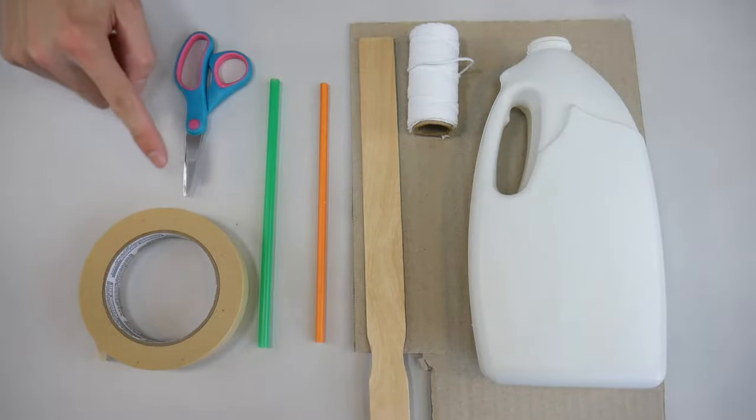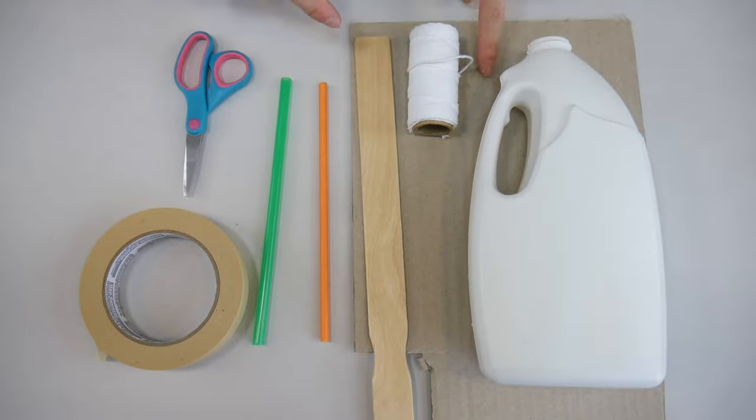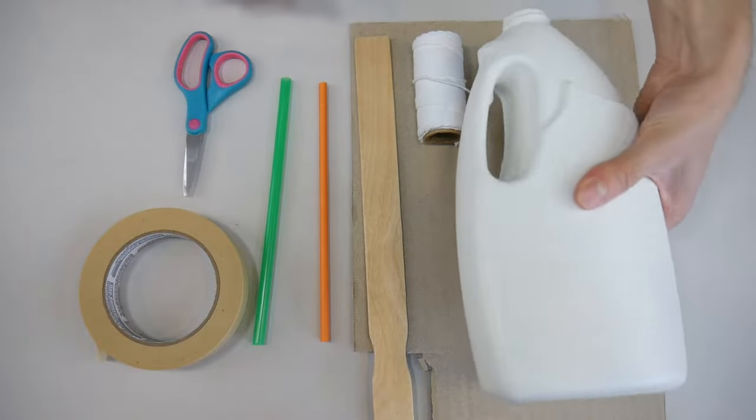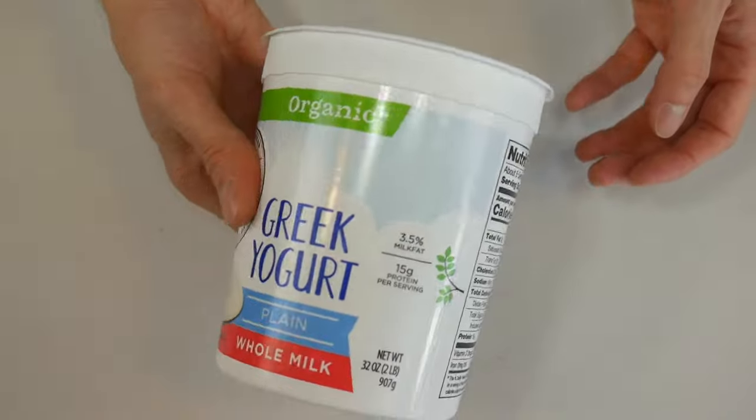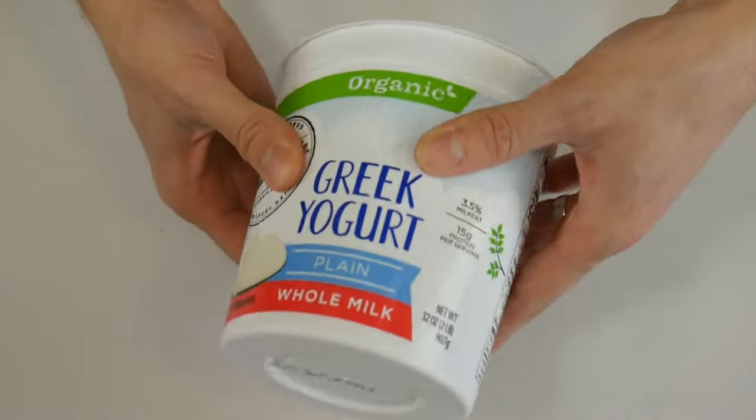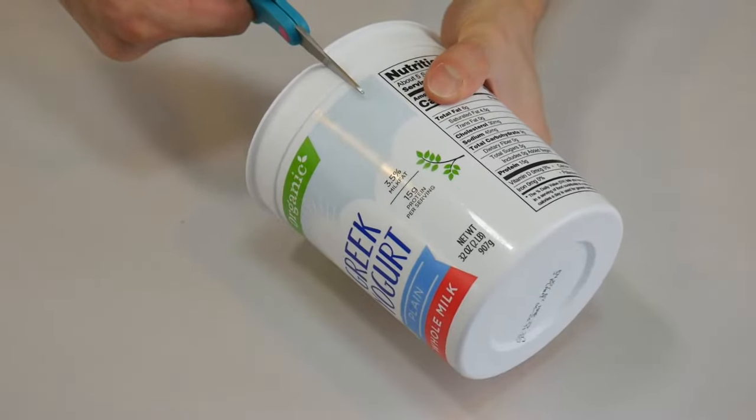Alright, let's take a look at the materials. All you need are scissors, tape, some paper or plastic straws, a paint stirrer, some cardboard, some cotton string, and some soft plastic recyclables. Make sure your plastics are safe to use by squeezing it and checking to see that it's soft and flexible. If you squeeze the plastic and it cracks, then don't use it.